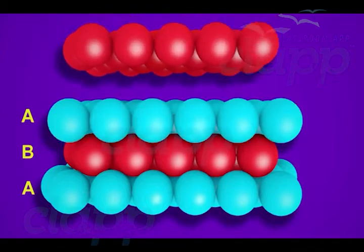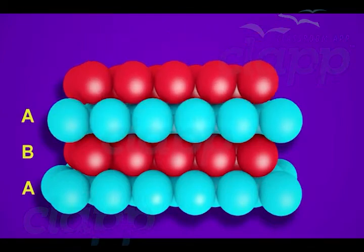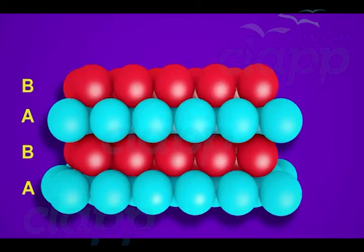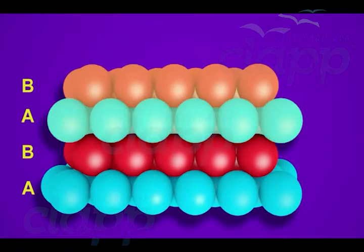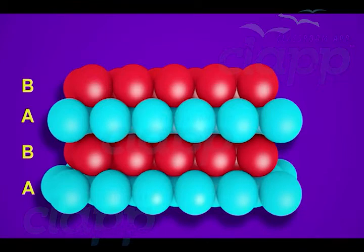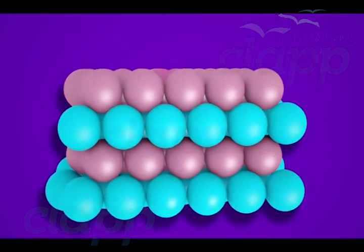Similarly, the fourth layer of spheres aligns with the spheres of the second layer and can be named as B type. Thus, the pattern of spheres is repeated in alternate layers. This pattern can be named as AB AB pattern and the structure is known as hexagonal close-packed structure.